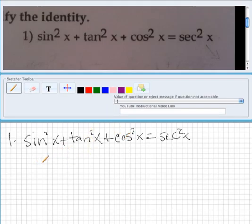One of our trig identities is sine squared theta, or x, plus cosine squared x is equal to 1. So we're going to write this out as tangent squared x equals secant.